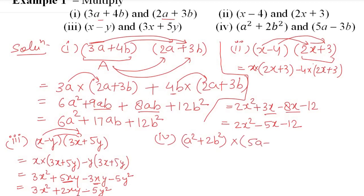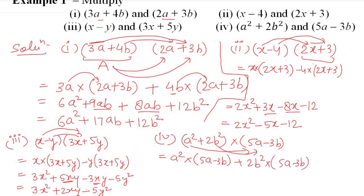For the fourth part: multiply (a² + 2b²)(5a - 3b). Distributing: a² × 5a = 5a³, a² × (-3b) = -3a²b, 2b² × 5a = 10ab², 2b² × (-3b) = -6b³. All terms are unlike, so this is the final answer: 5a³ - 3a²b + 10ab² - 6b³.